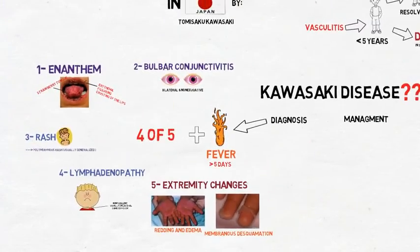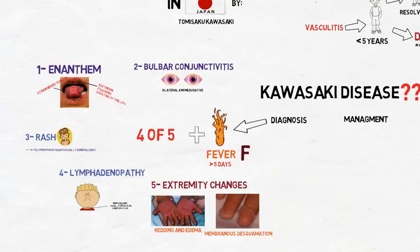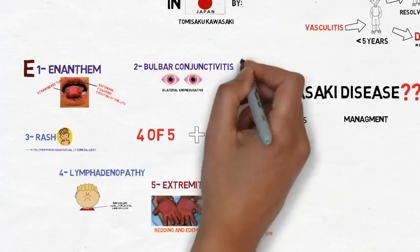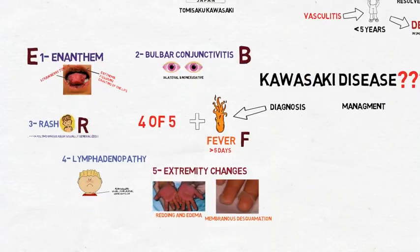So how do we remember these diagnostic criteria? Let's try to make a mnemonic. F for fever, E for enanthema, B for bulbar conjunctivitis, R for rash.